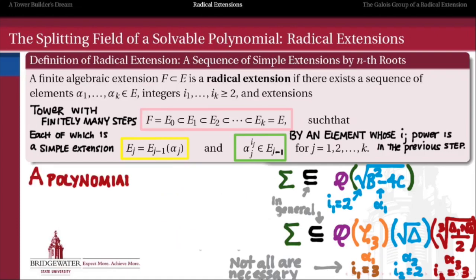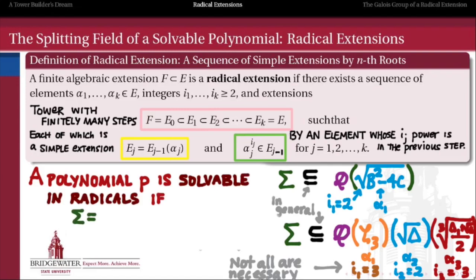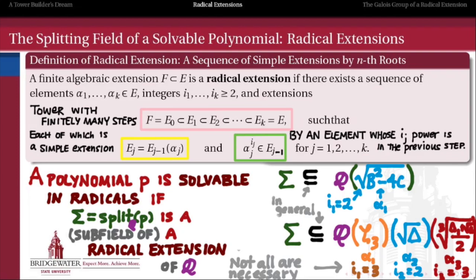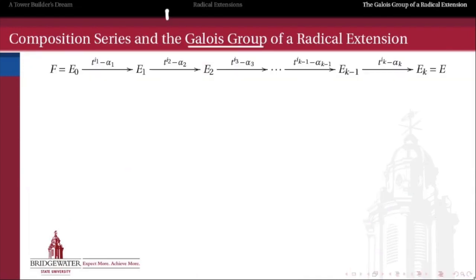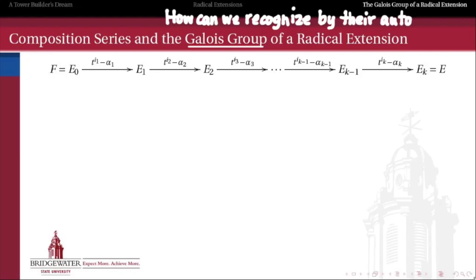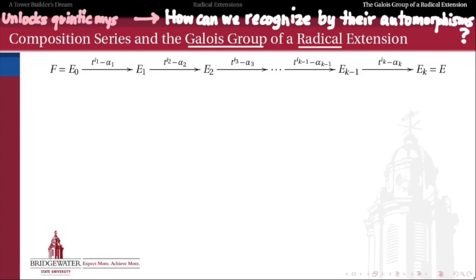A polynomial is solvable in radicals — meaning we can find a simple formula in radicals to discover its roots from its coefficients — if its splitting field is a subfield of one of these radical extensions. If we're talking about polynomials with rational coefficients, we want the splitting field to be a subfield of a radical extension of the rationals. That's what kinds of fields we want to see as the splitting fields of polynomials that have solutions in simple radicals. An understanding of how we can recognize a radical extension by its automorphism group is exactly what we need to unlock the mystery of the quintic formula, because Galois groups of quintics can be much more complicated than those of quartics, cubics, and quadratics.